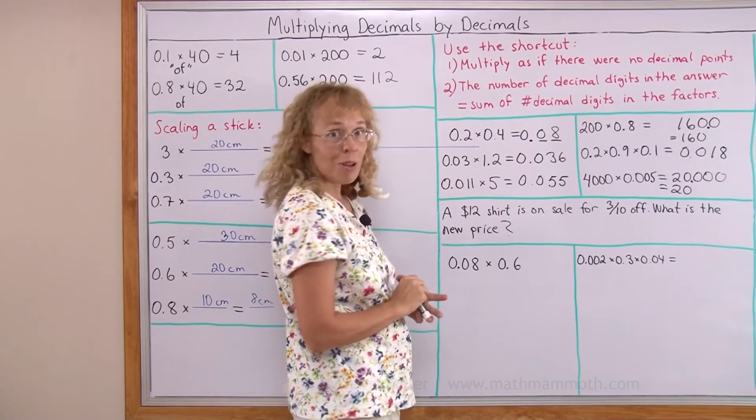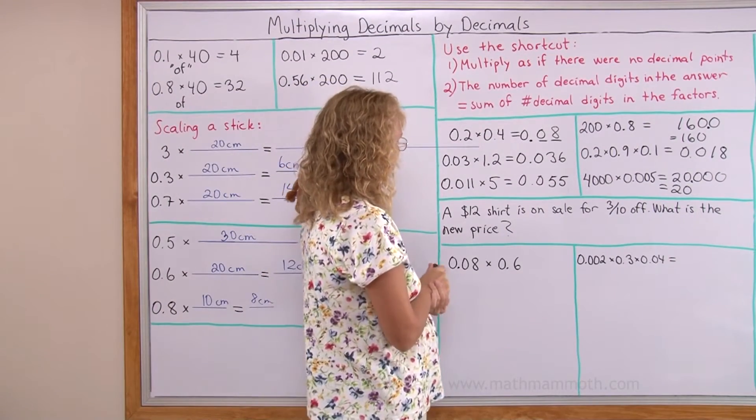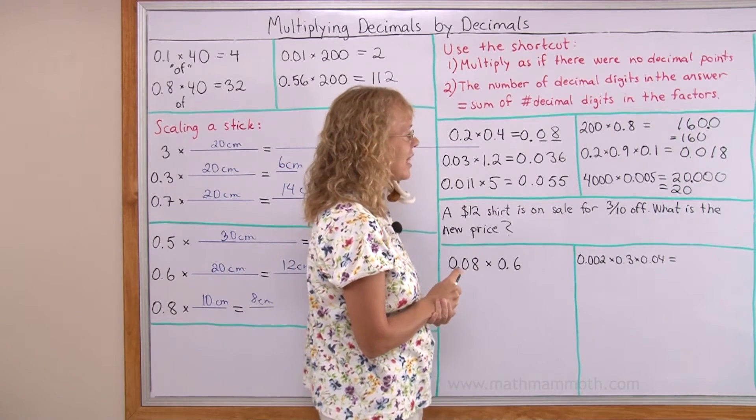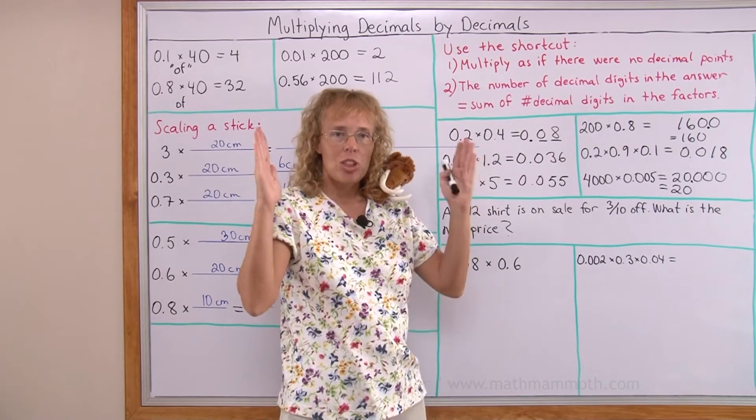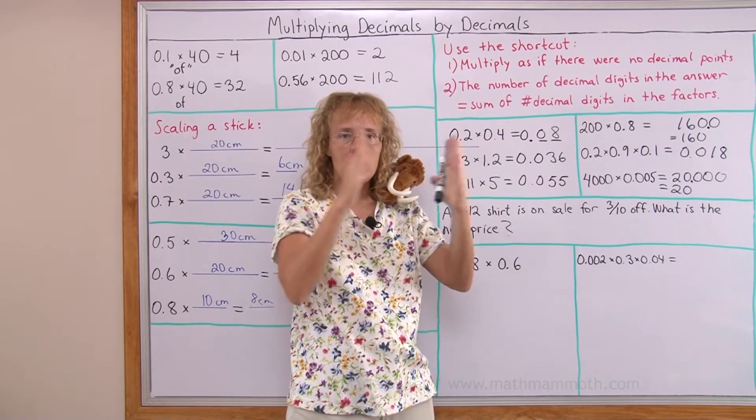Okay? A little word problem. Only one for this lesson. A twelve dollar shirt is on sale for three tenths off. What's the new price? Okay? Imagine this is your whole price.